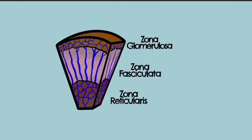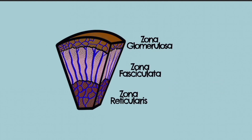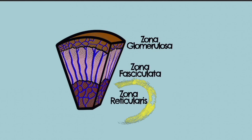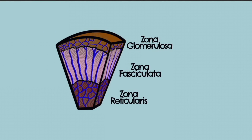The zona fasciculata is responsible for producing glucocorticoids such as cortisol. Cortisol functions to increase blood sugar through gluconeogenesis, to suppress the immune system, and to aid the metabolism of fat, protein and carbohydrates. Finally, the zona reticularis is the innermost cortical layer and produces androgens, mainly testosterone precursors. Deficiency of androgen production here rarely produces symptoms because androgens are primarily produced by the testes in men and ovaries in women.